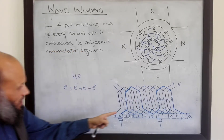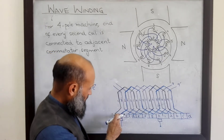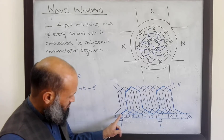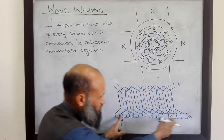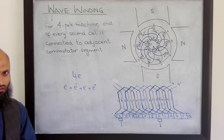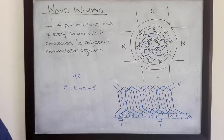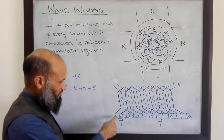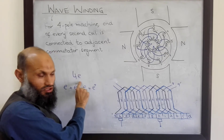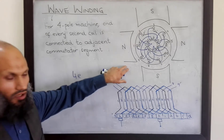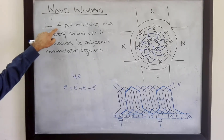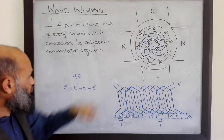You can verify it for, for example, the coils between commutator segments D and C. Hence, this wave winding resolves the problem of voltage imbalance. Between two commutator segments, voltage is always four E. So it resolves the problem of voltage imbalance.